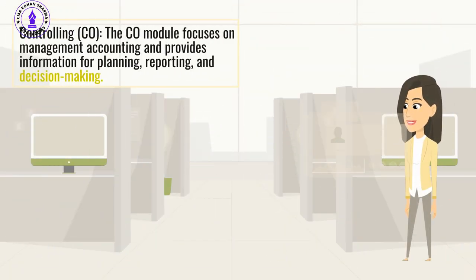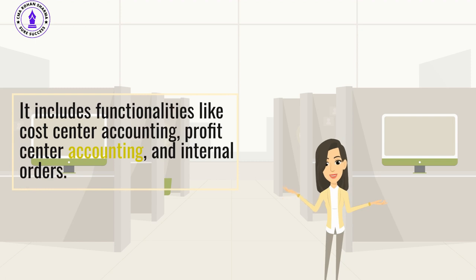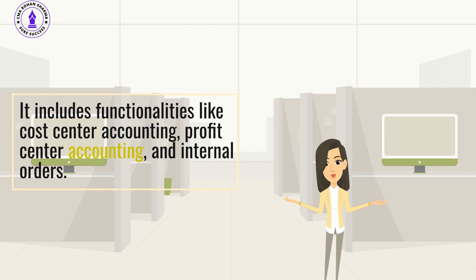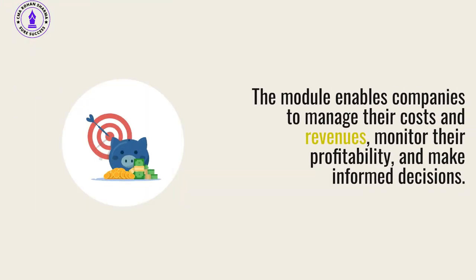Controlling (CO): The CO module focuses on management accounting and provides information for planning, reporting, and decision-making. It includes functionalities like cost-center accounting, profit-center accounting, and internal orders. The module enables companies to manage their costs and revenues, monitor their profitability, and make informed decisions.